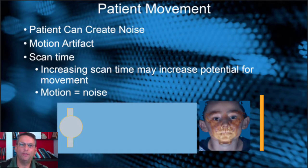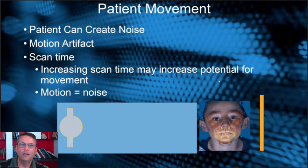If we were to talk about just one thing to improve your image quality, I think patient motion has the biggest advantage. Patients can introduce and create noise into your scan — by reducing patient motion, you reduce noise. That's really the motion artifact aspect of it when you see the double image. When we increase the scan time, we increase the potential for patient motion, and more motion equals more noise.